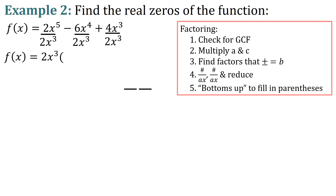2x to the fifth divided by 2x cubed is x squared. Negative 6x to the fourth divided by 2x cubed: negative 6 divided by 2 is negative 3, giving negative 3x. 4 divided by 2 is 2, and x cubed divided by x cubed is 1, so we have plus 2. Now we factor the trinomial x squared minus 3x plus 2. We multiply a and c: 1 times 2 is 2. The factors of 2 are 1 and 2, and negative 1 minus 2 equals negative 3, which equals b.